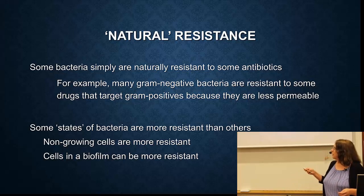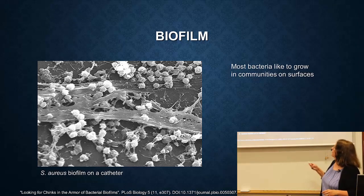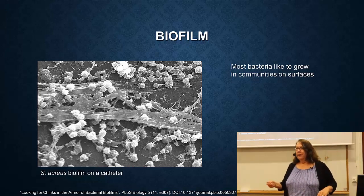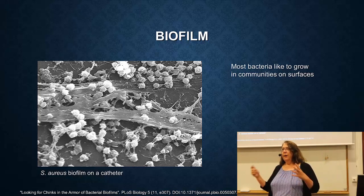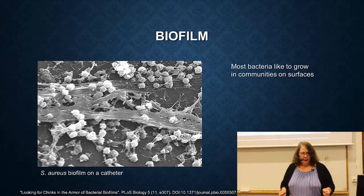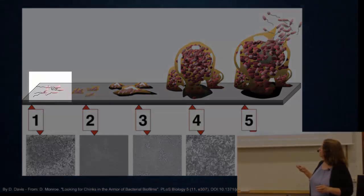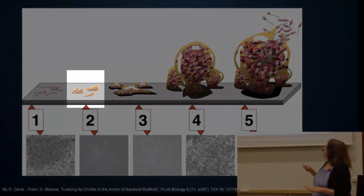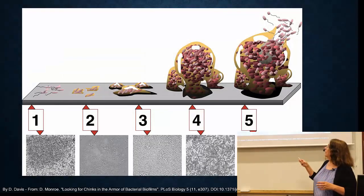There's also something called biofilm, and these can be much more resistant. Biofilms are growth of cells on surfaces. Most bacteria like to grow in communities on surfaces. This is an example of a staph biofilm taken from a catheter. You brush your teeth in the morning and you're removing a biofilm. You pick up a rock in the river - that is usually covered by a biofilm. They grow everywhere. The bacteria, which are normally swimming around, might bump into a surface, start to grow on it, attach specifically to the surface, and start to make polysaccharides and form little colonies.